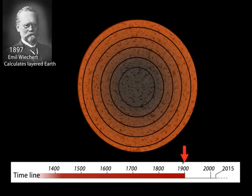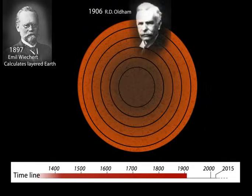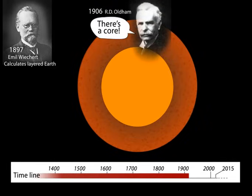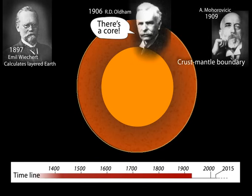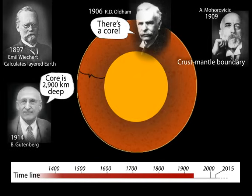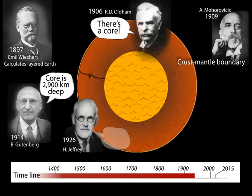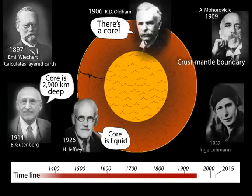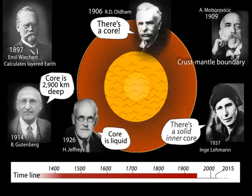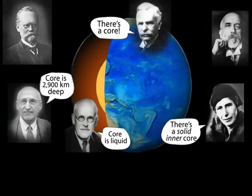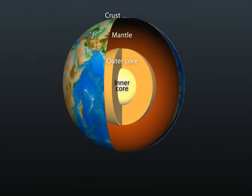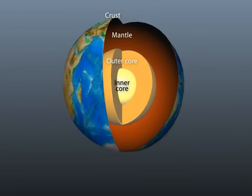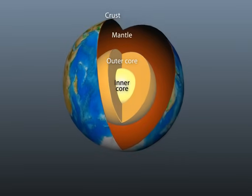In the early 1900s, scientists discovered they could use data from earthquakes as a method for looking deep beneath the surface. By understanding the travel times of different seismic waves to worldwide stations, scientists were able to calculate where boundaries occurred and what those boundaries represented. They thus determined that the Earth has three layers based on chemical composition: crust, mantle, and core.